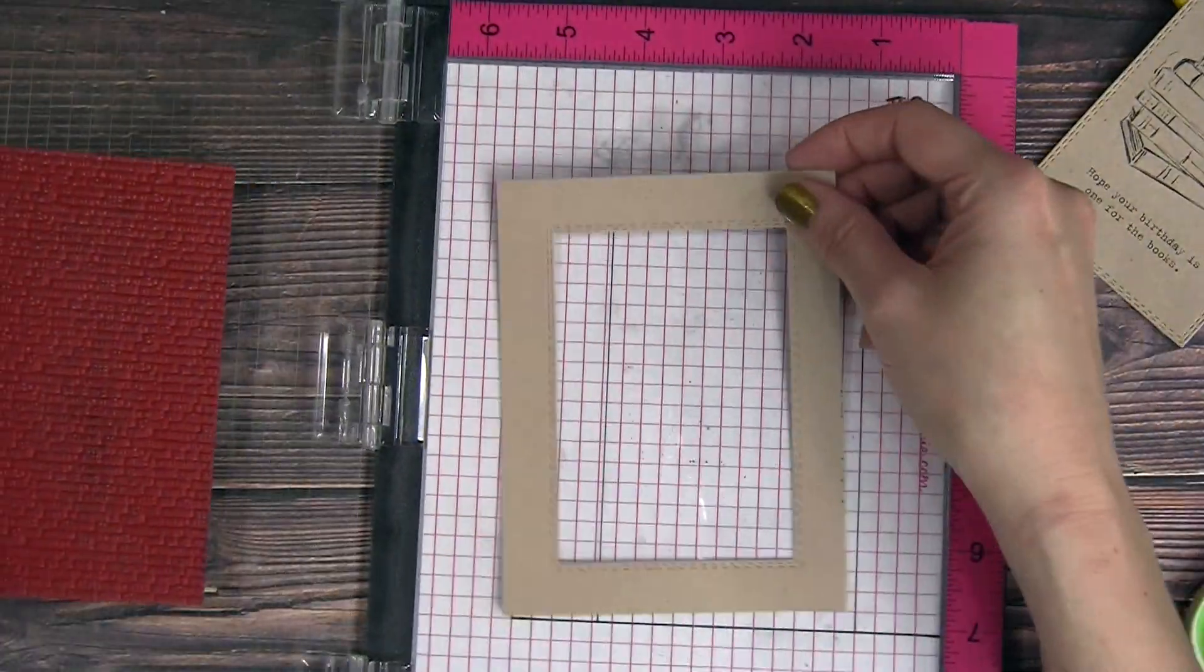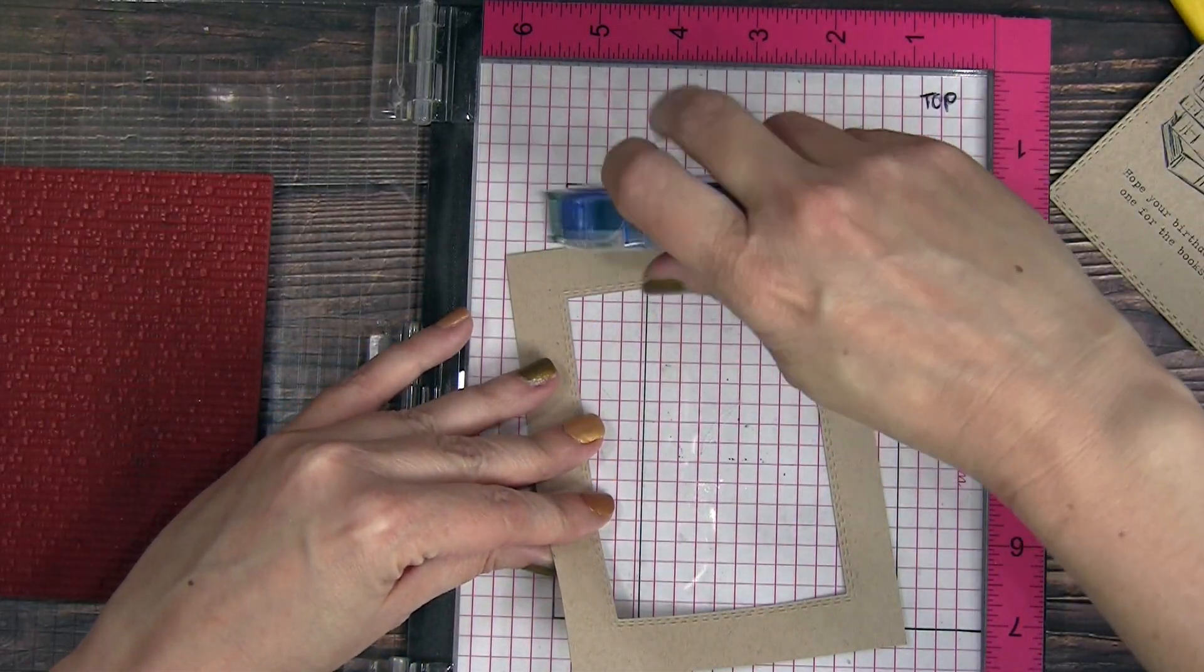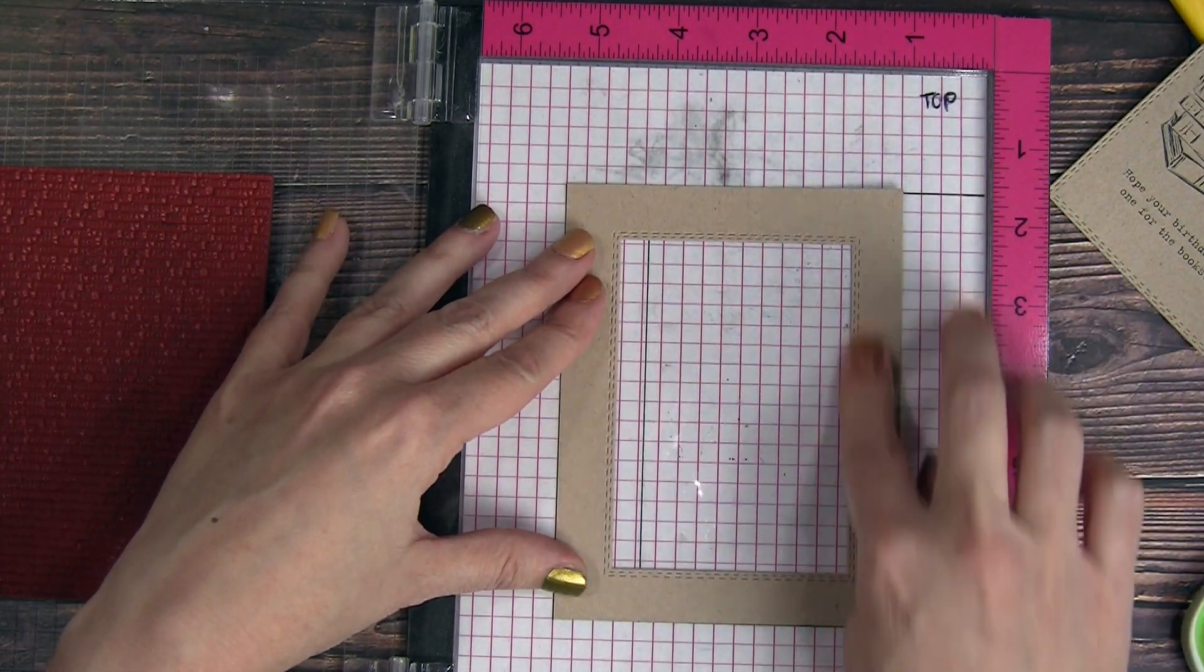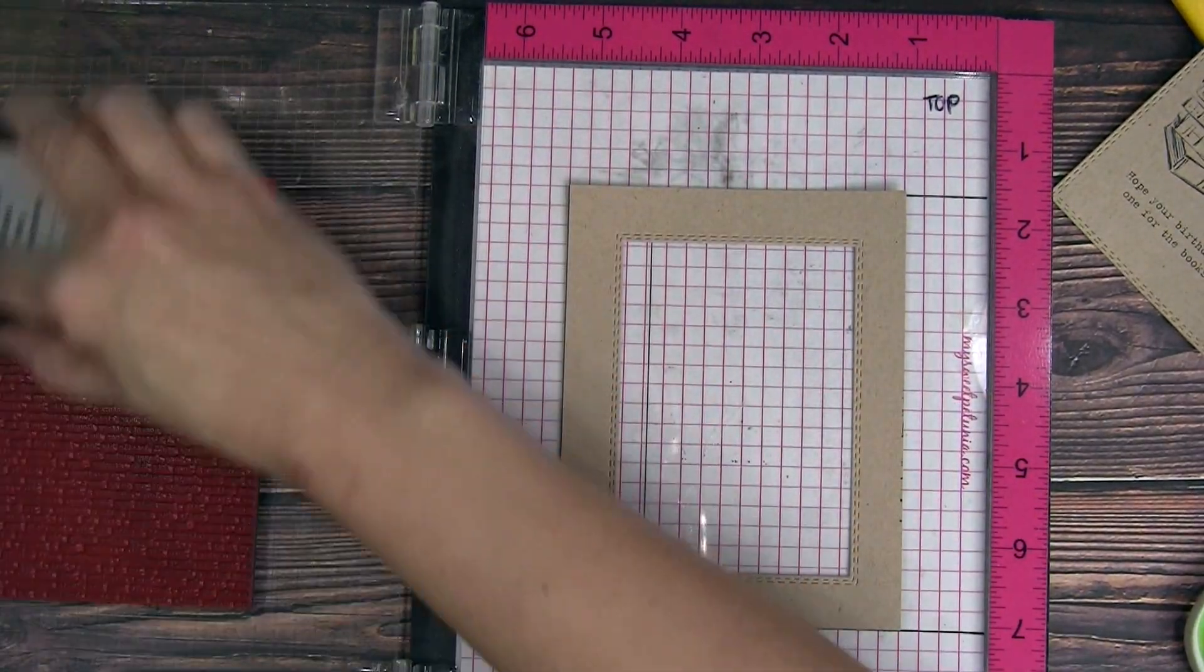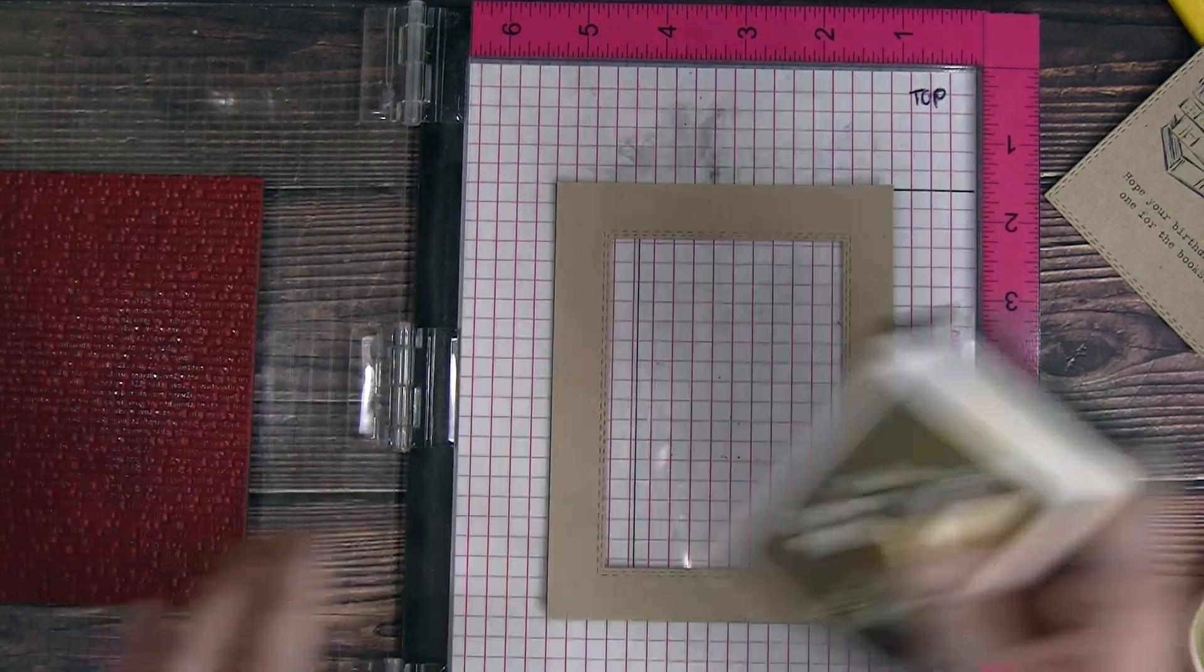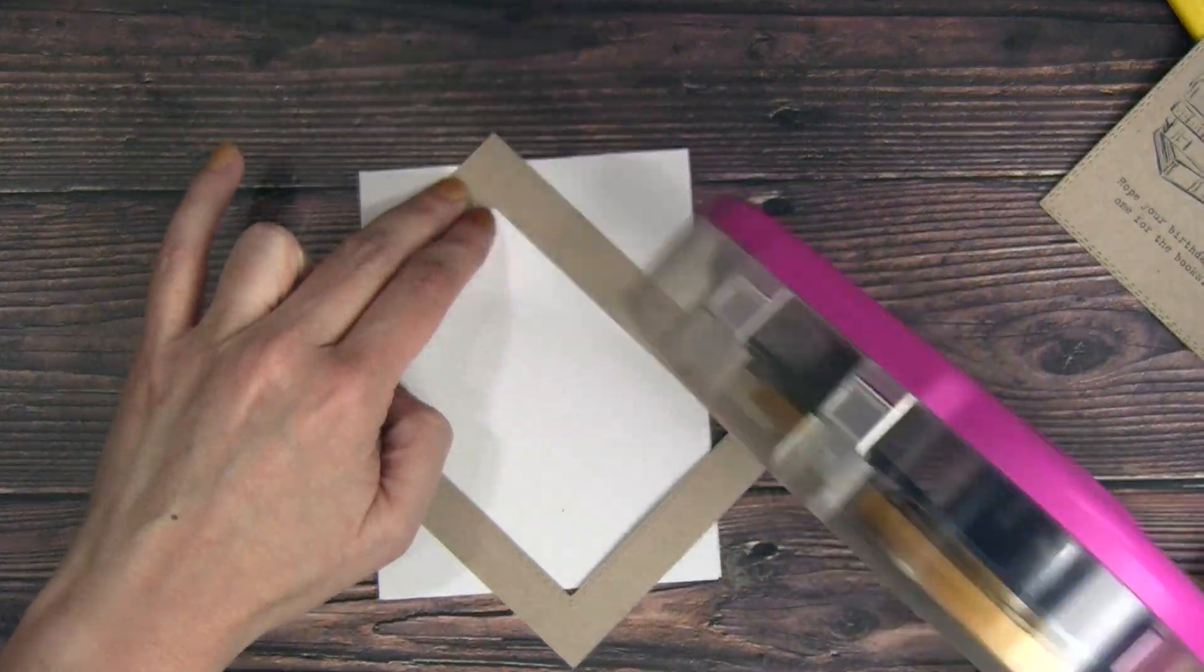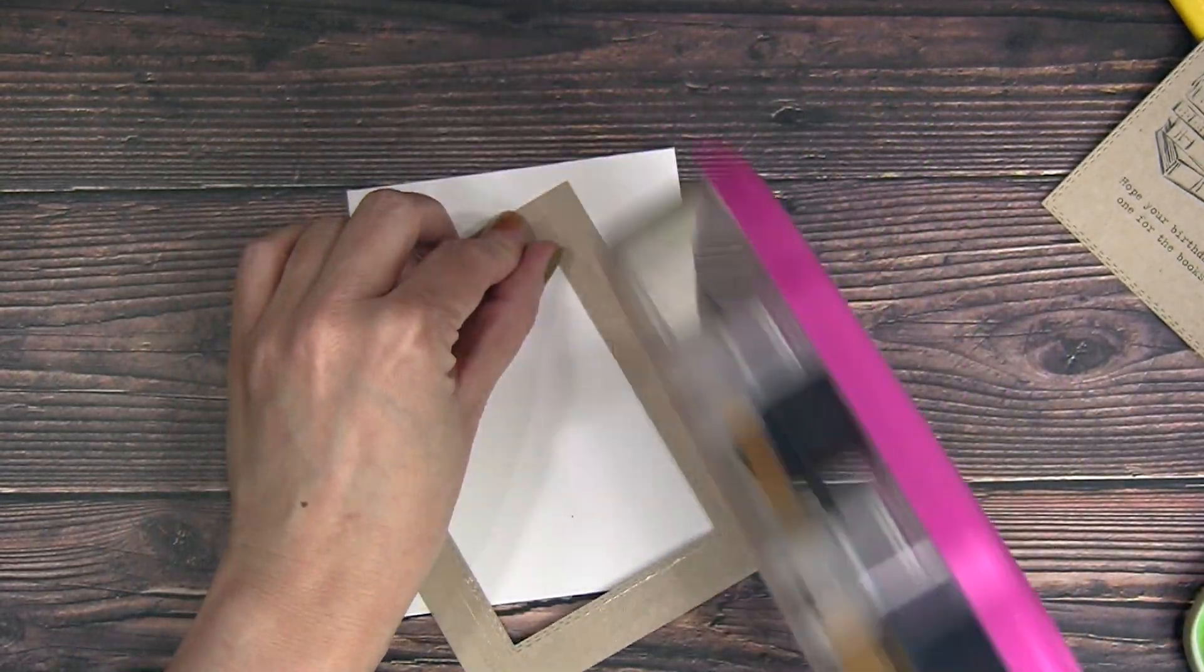Moving on to card number two, I had stamped that stack of books and sentiment in the center of a four and a quarter by five and a half sheet of craft cardstock. And then I just die cut that center panel out. It's a stitched die that Gina Marie Designs makes. It's a double stitch, so it stitches on the outside of the cut and on the inside of the cut, which I thought was perfect. So I die cut out those stacks from the center.